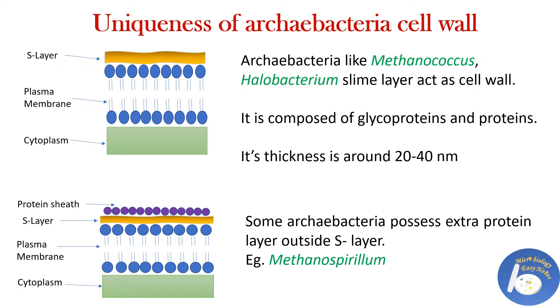The cell wall of archaebacteria is very unique. Different groups have different kinds of cell walls. Archaebacteria like Methanococcus and Halobacterium don't have a cell wall, but there is a slime layer which acts as a cell wall. This slime layer is composed of glycoproteins and proteins, and its thickness is around 20 to 40 nanometers.